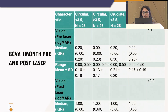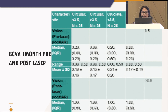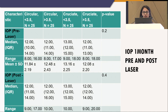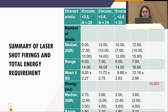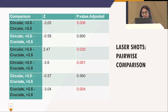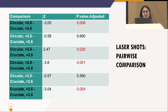In our results, we found there was no significant difference between the BCVA and the IOP in one month pre- and post-laser comparison. However, there was a significant difference found between the number of laser shots fired and the total energy requirement between all four groups. In pairwise comparison, there was a significant difference found between the circular shape of less than 3.5 mm and cruciate more than 3.5 mm.